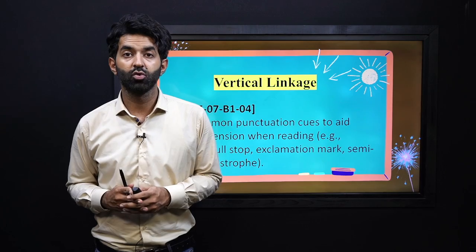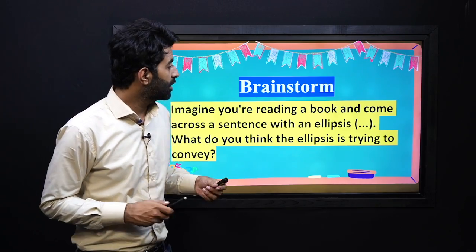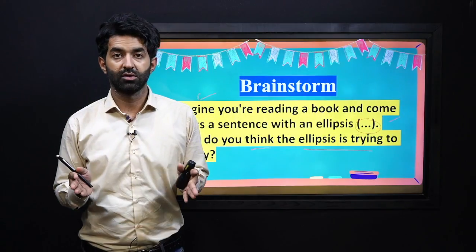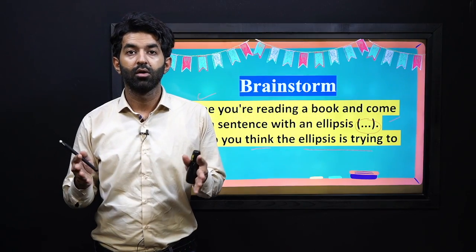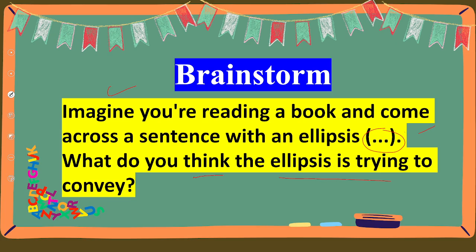Here is a vertical linkage that you can link with your previous grade. For today's brainstorming session, imagine you are reading a book and come across a sentence with an ellipsis — three dots — maybe in a character's dialogue or in the narration of a story. What do you think the ellipsis is trying to convey? Why do we use these three dots in our writing? This is what we are trying to understand.